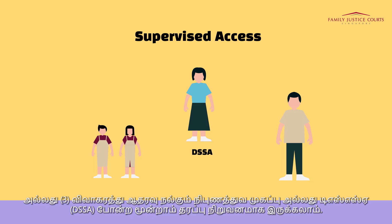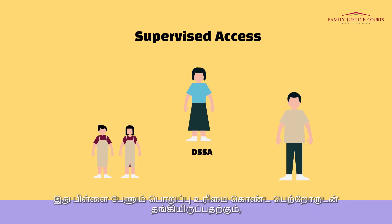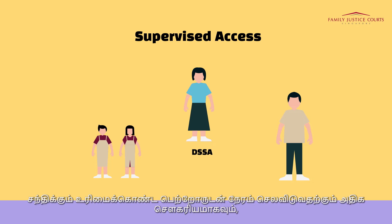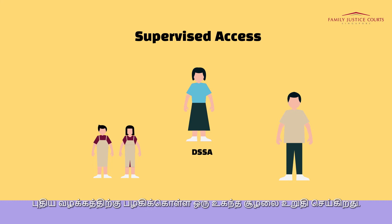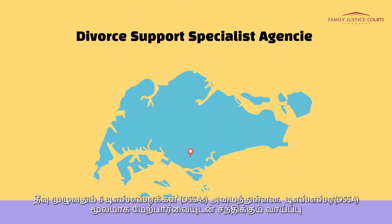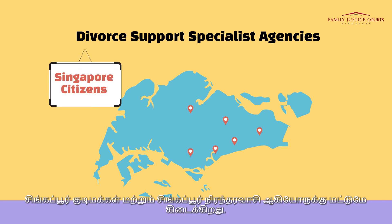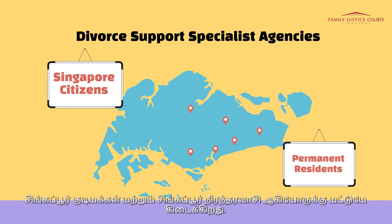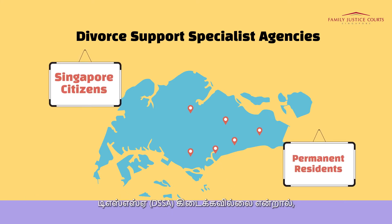This ensures a conducive space for the child to become increasingly comfortable and more attuned to the new routine of staying with the care parent and spending time with the access parent. There are six DSSAs located across the island. Supervised access via the DSSA is only available for Singapore citizens and Singapore permanent residents. If a DSSA is not available, supervised access may be facilitated by a third party child specialist facility.